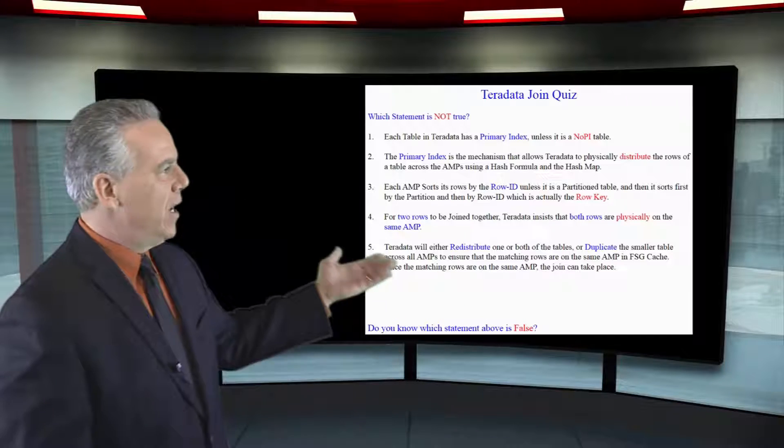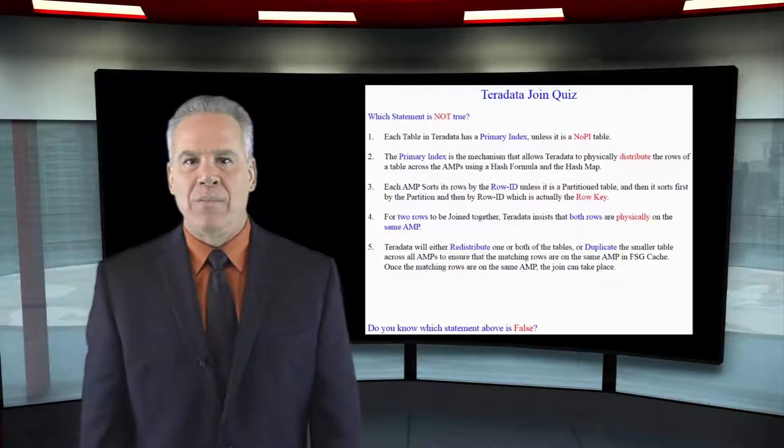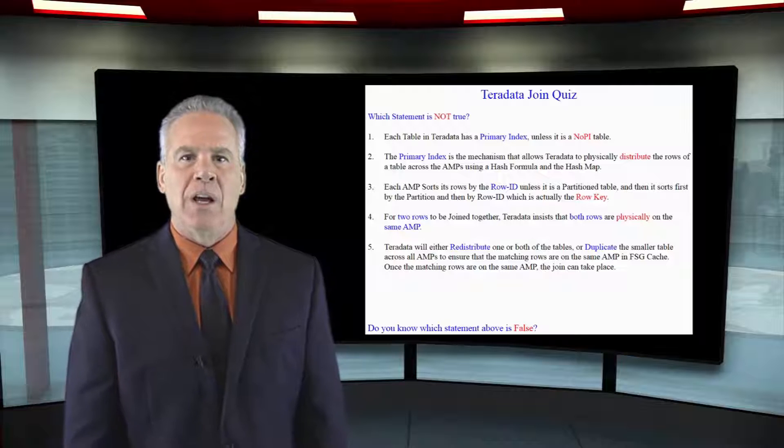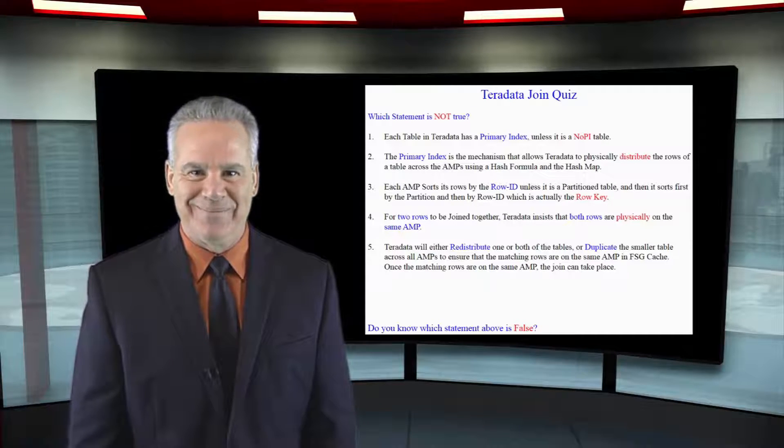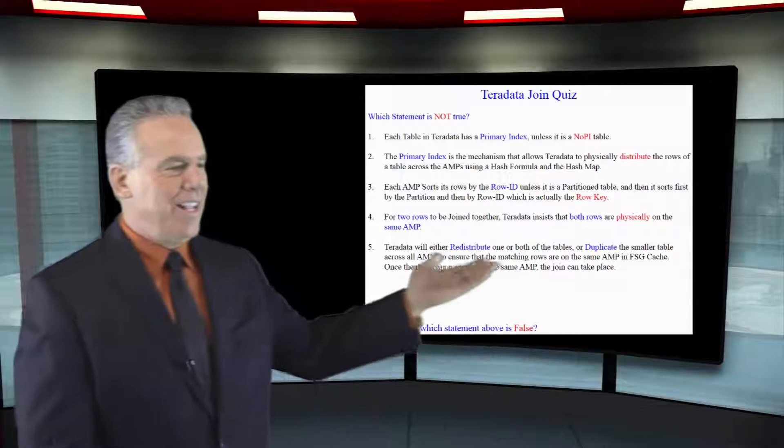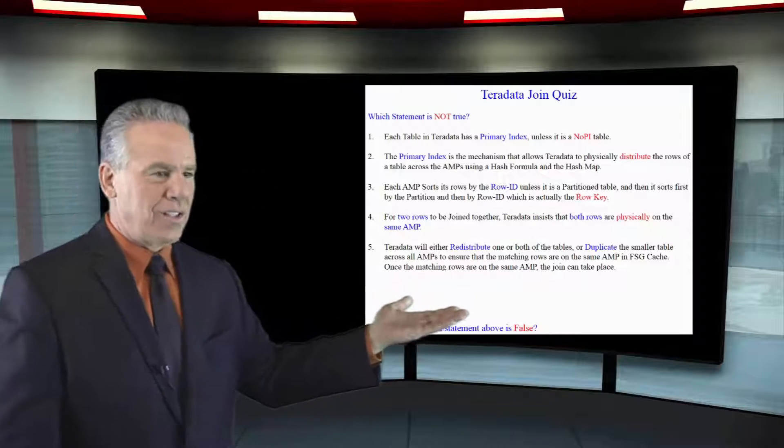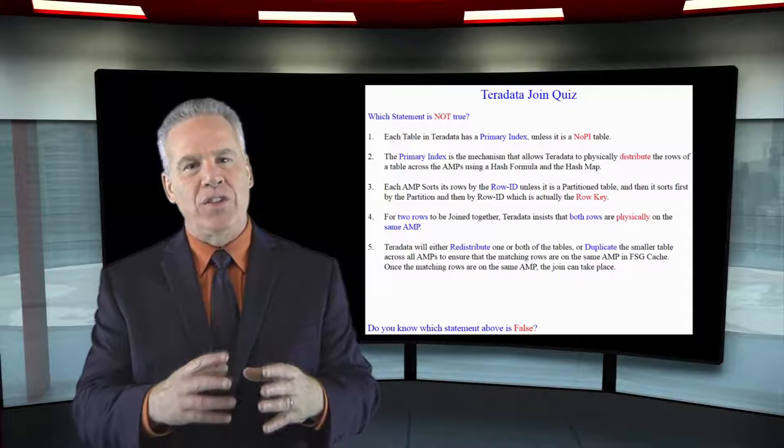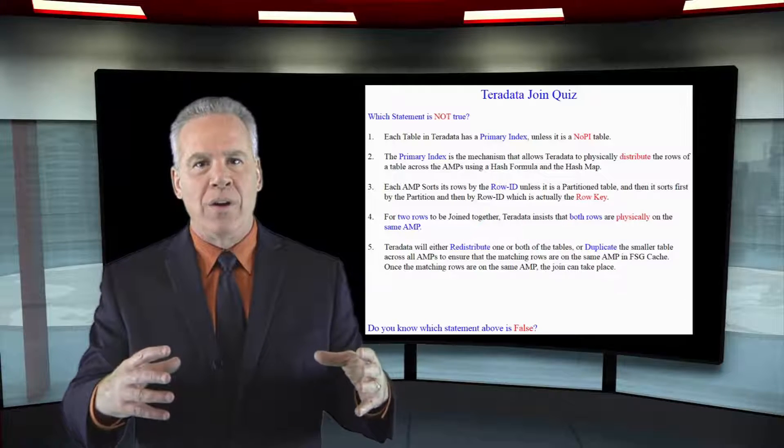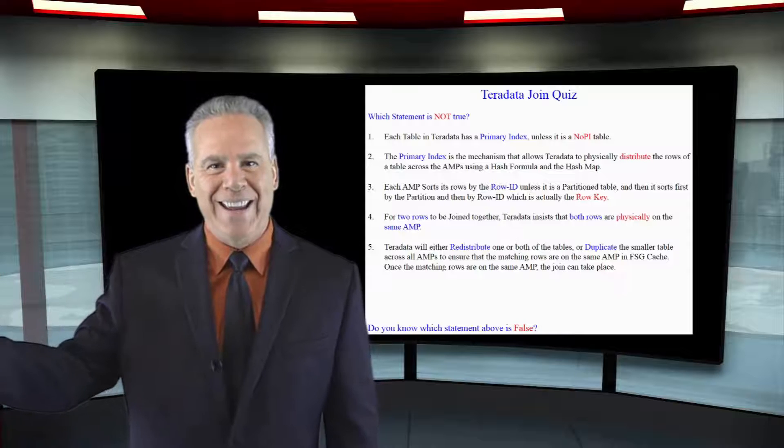Every table in Teradata has a primary index unless it's a no PI table. It is the primary index that is the mechanism that physically distributes the row across the amps.